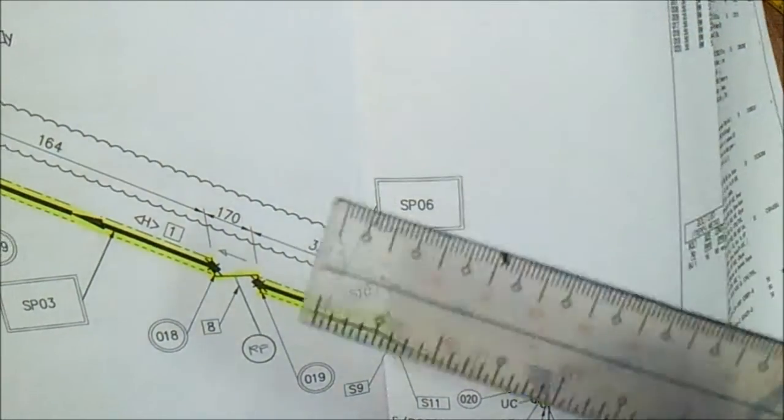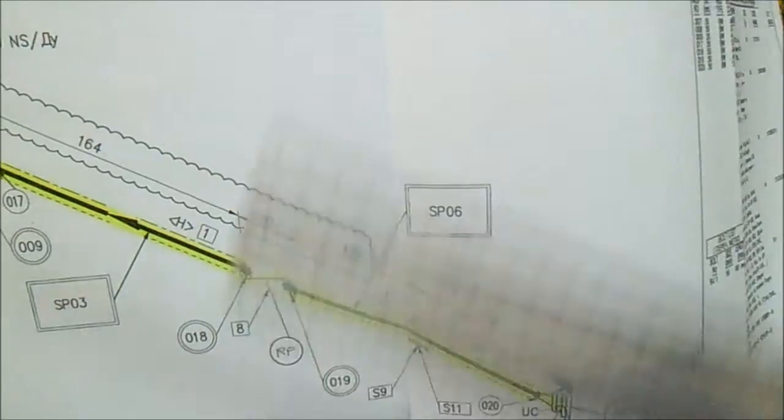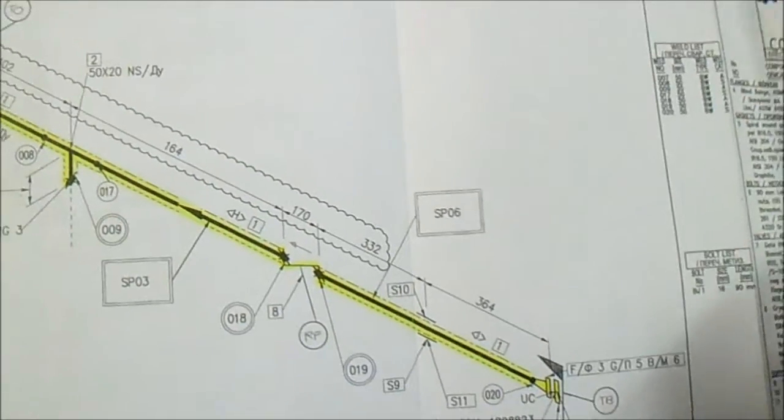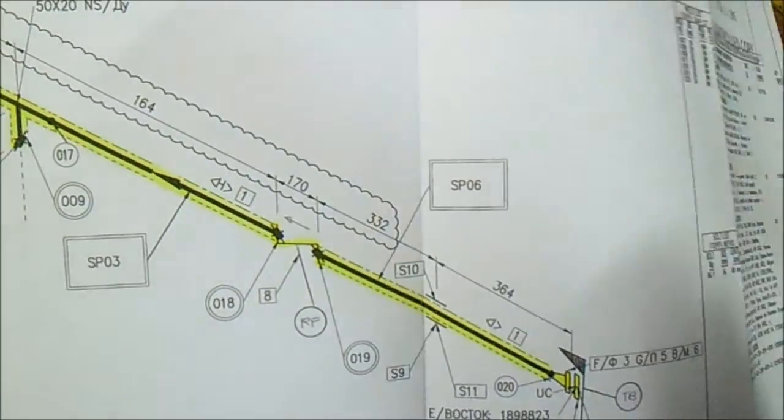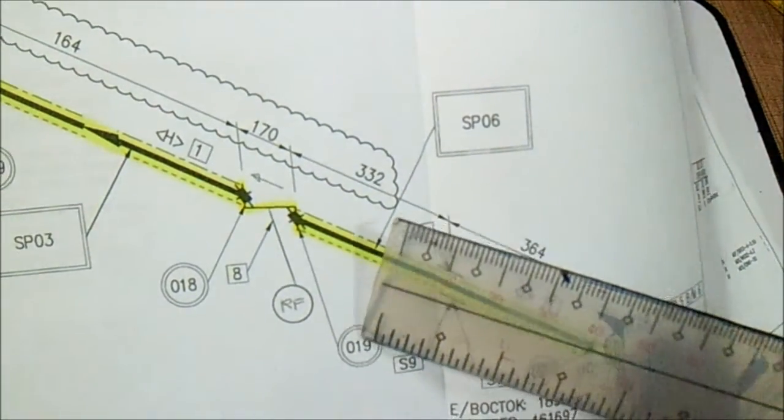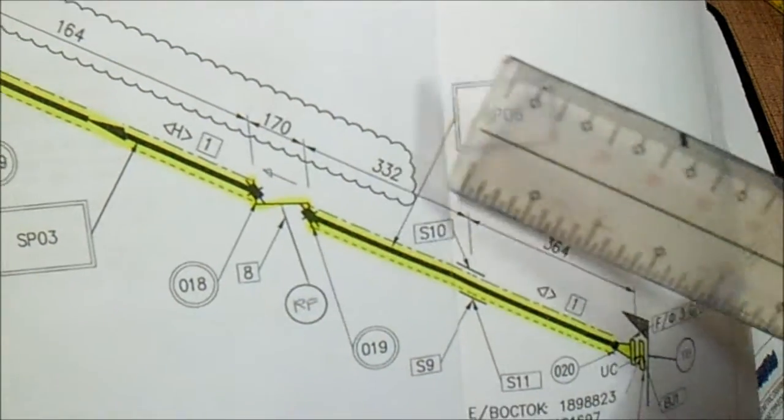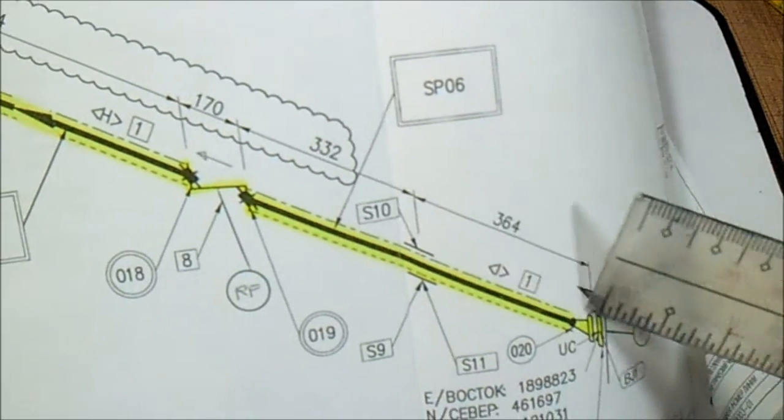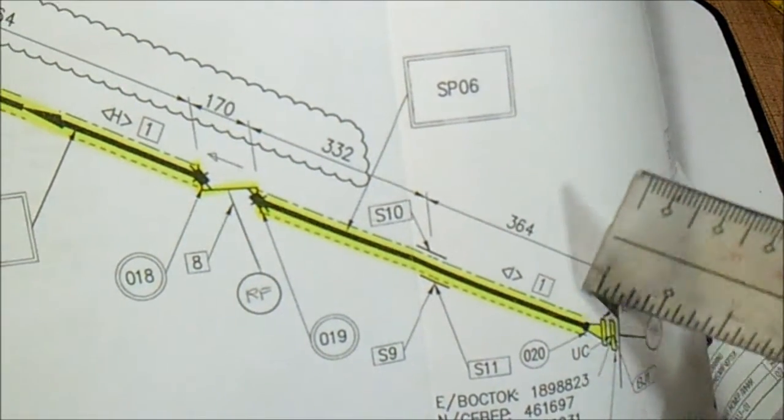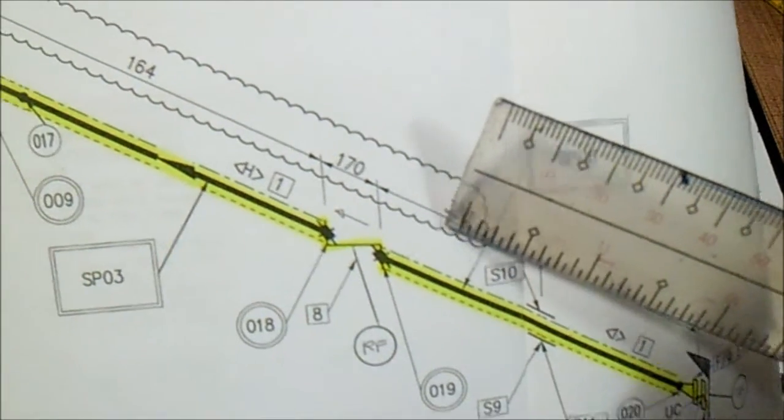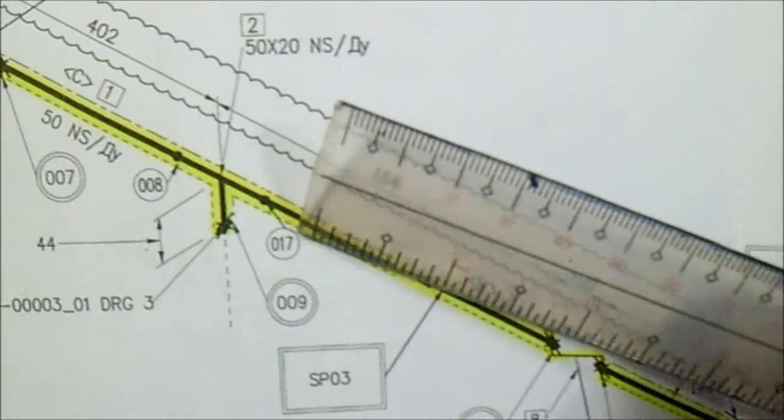The type of pipe - this is carbon steel or stainless steel. This is the spool number and this is the joint number. If you see this joint number they have a line, that is the field weld. And this joint 20 is a shop weld. This dimension is important.